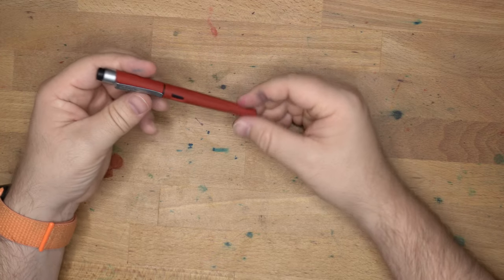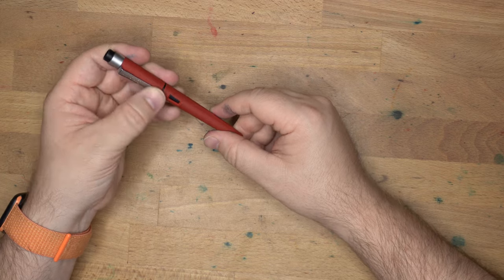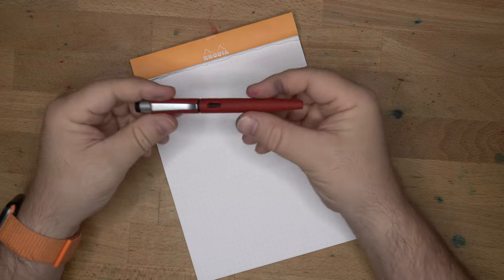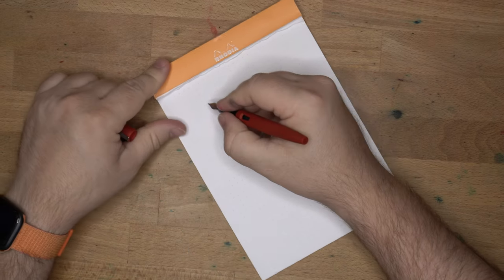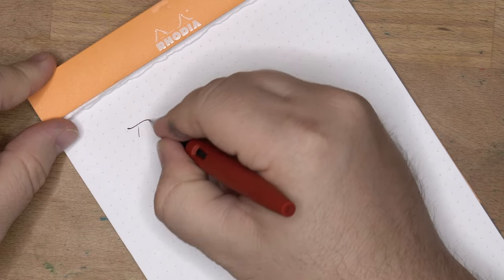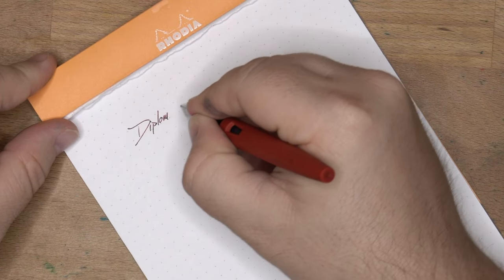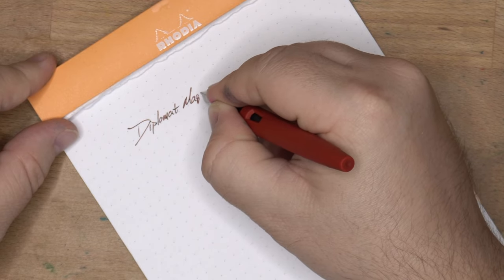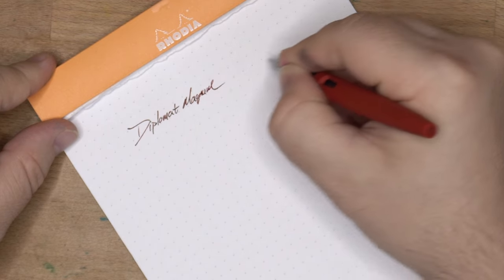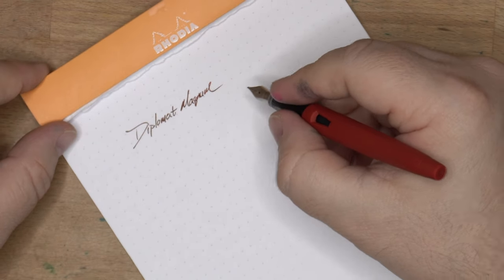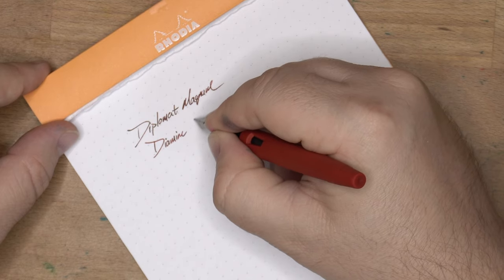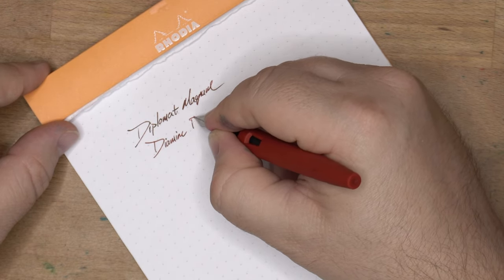Okay, let's do a little bit of a writing sample, show it next to some other pens, and at the very end, I'll throw up a graphic with some measurements and things of that nature. Okay, let's do a writing sample. This is that Diplomat Magnum. And it has a cartridge in it, which is Diamine Burgundy Royale.